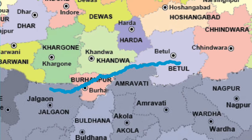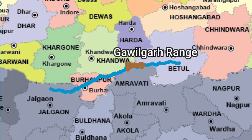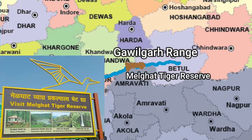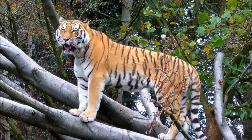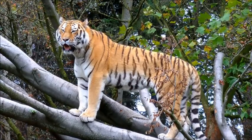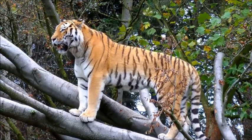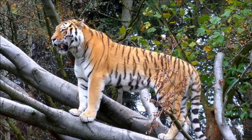As the river Tapi moves ahead, this region has the famous mountain ranges known as the Gawilgard range. Here in the Gawilgard range also lies the Melghat Tiger Reserve. The Melghat Tiger Reserve is also famously known for being one of the first tiger reserves of the 1973 Project Tiger.